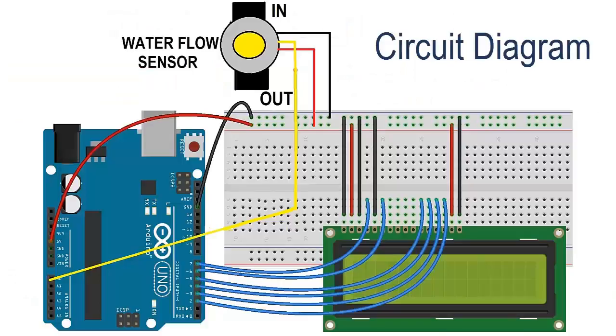This is the circuit diagram. The analog pin of the water flow sensor is connected to Arduino and a 16x2 LCD interface that will display water flow rate and water volume.